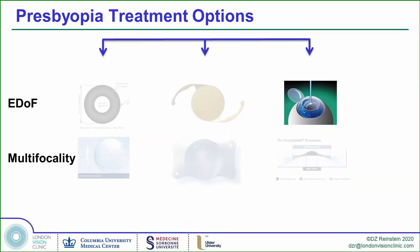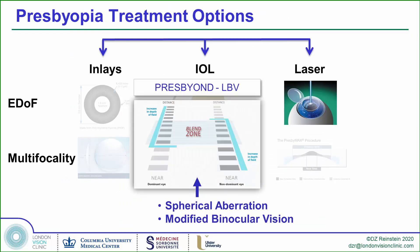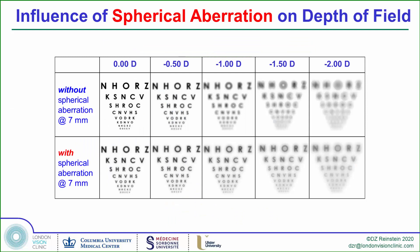What I'm going to focus on is a better option: using spherical aberration in the right doses to improve the depth of field, and combining this with a micro-anisometropia to provide modified binocular vision. Consider the increasing defocus along the top row, and let's look at the minus-1.50 defocus simulation. Adding spherical aberration to the same minus-1.50 defocus provides much better edge detection, thanks to the neural processing of this particular aberration — a natural feature of the human visual system.